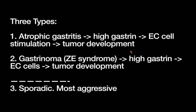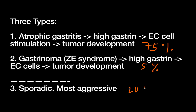In terms of frequency, type 1 makes up about 75% of gastric neuroendocrine tumors. Type 2, since gastrinomas are extremely rare, accounts for only about 5%. And the sporadic type 3 represents roughly 20% of gastric neuroendocrine tumors.